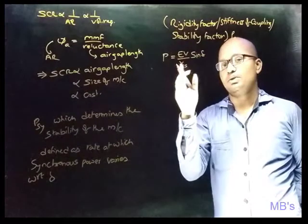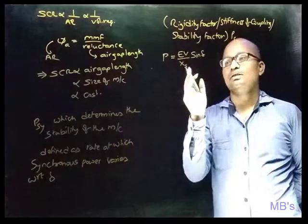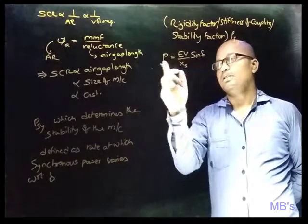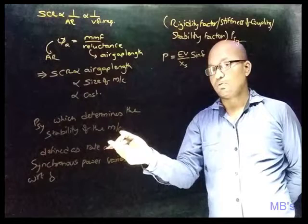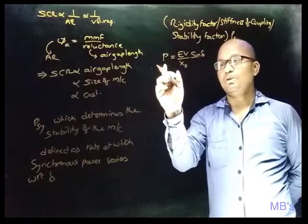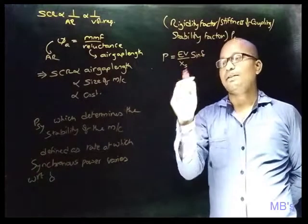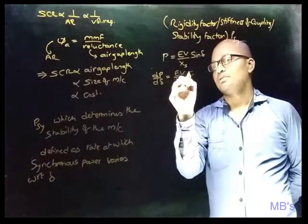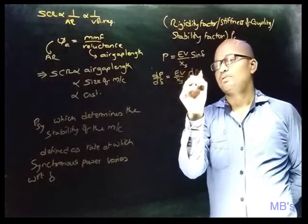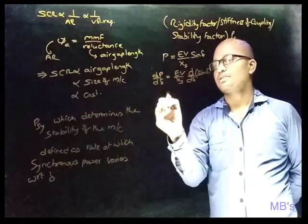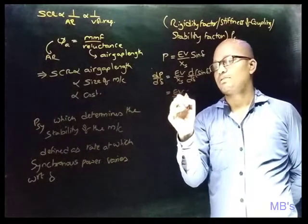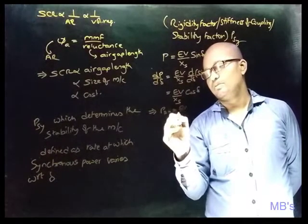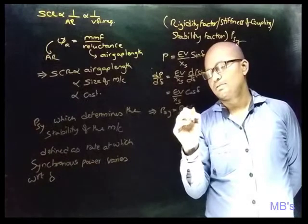The power equation is P equals EV divided by Xs times sin δ, which will be discussed in detail in the next topic on power equations. According to the definition of synchronizing power coefficient, it is the rate at which synchronous power varies with respect to the load angle delta. Differentiating P with respect to δ gives dP/dδ, which yields EV divided by Xs times cos δ.